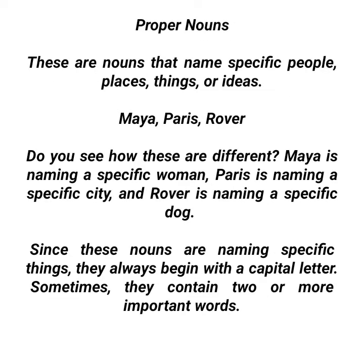Now, proper nouns. These are nouns that name specific people, places, things, or ideas — like Maya, Paris, or Rover. Each of these names something specific, unlike common nouns which remain generic.